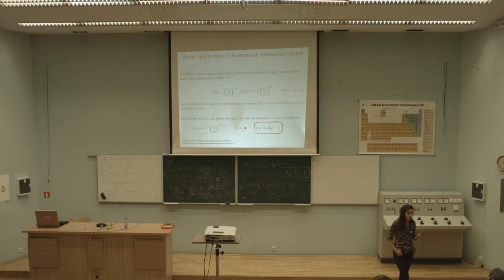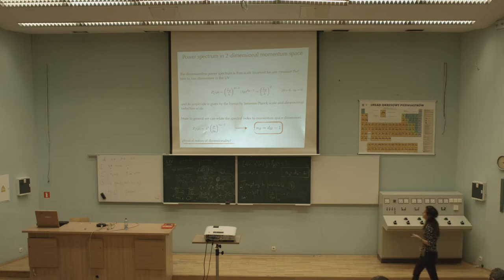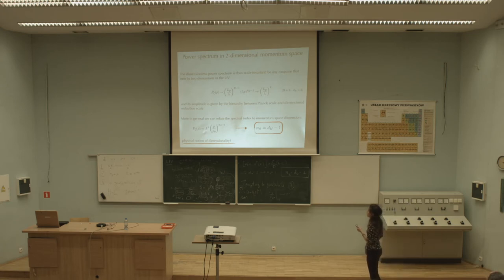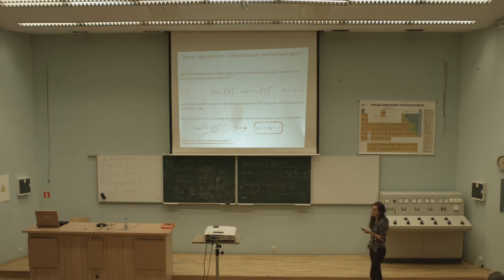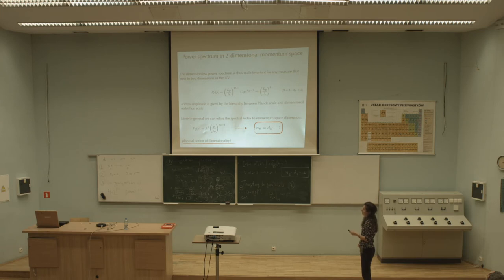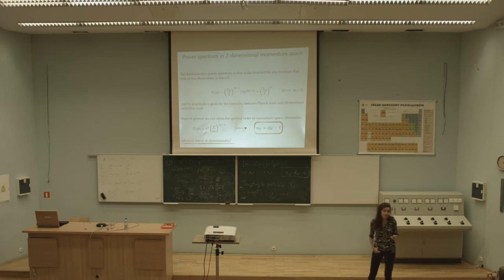We can stay at this generic D_H level and compare with the way cosmologists usually parameterize the power spectrum — in terms of an amplitude and a spectral index. By comparing our expression with this parameterization, we find there is always a direct relation between the dimensionality of momentum space and the spectral index. So now we have a physical notion of dimension because the power spectrum of the scalar field is something you can actually measure.